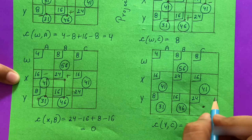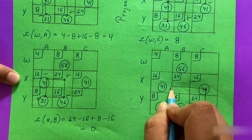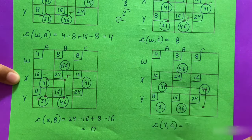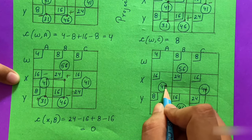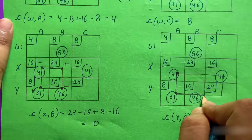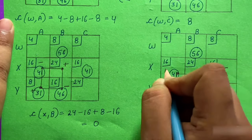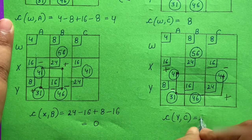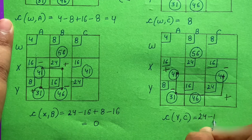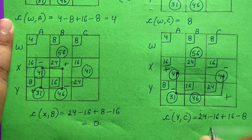For the YC cell, we trace the closed path through stone squares and assign signs: improvement index = 24 − 16 + 16 + 16 − 8 = +16. Wait — that simplifies to +16. All improvement indices are now positive or zero.